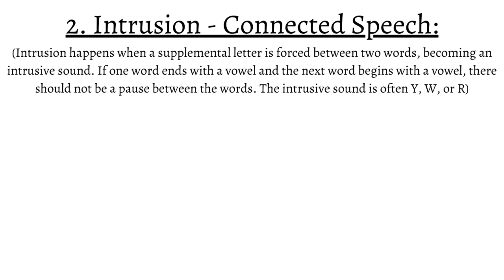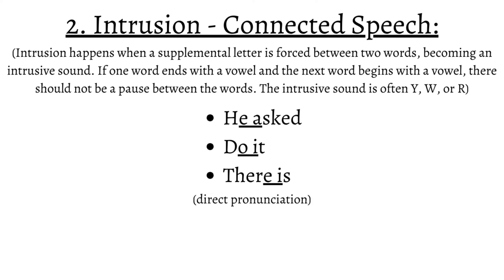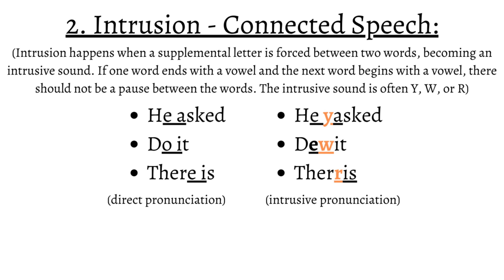Intrusion is another concept, and it happens when a supplemental letter is forced between two words, thus becoming an intrusive sound. If one word ends with a vowel and the next word begins with a vowel, there should not be a pause between the words. The intrusive sound is often Y, W, or R. Some examples are 'he asked,' 'do it,' 'there is.' This is the direct pronunciation, but to make it intrusive, we add a supplemental letter in between the words.